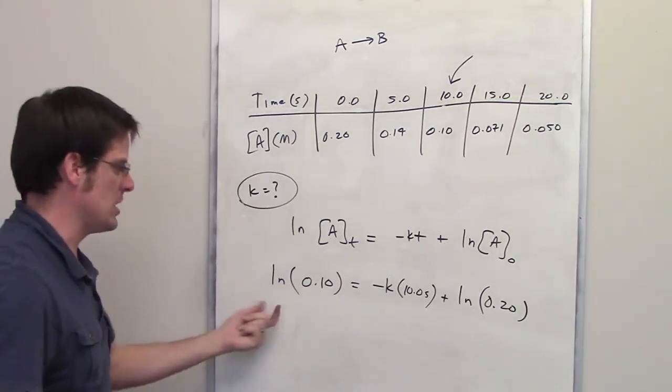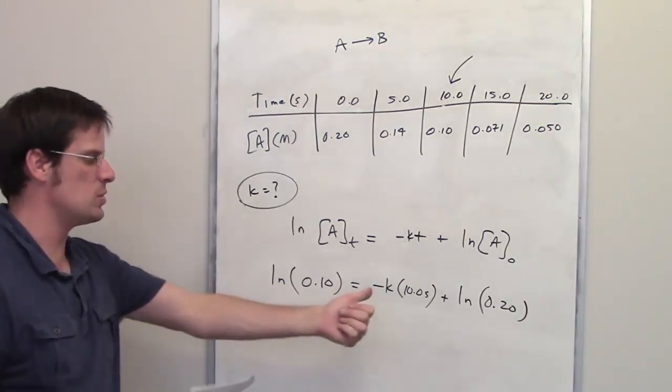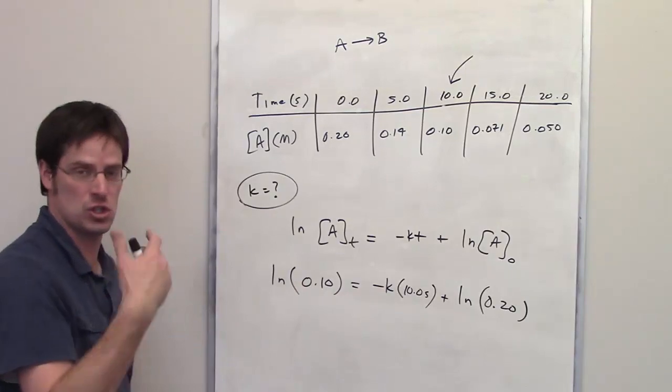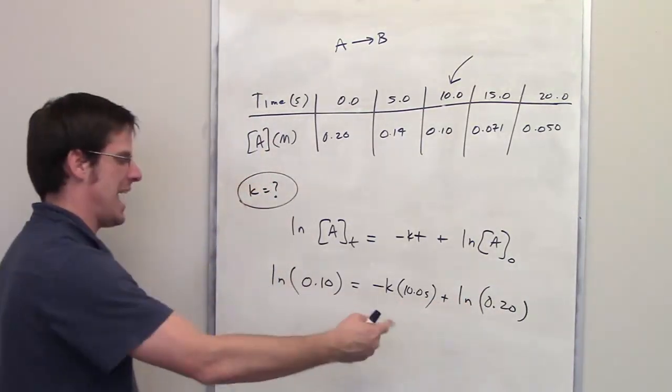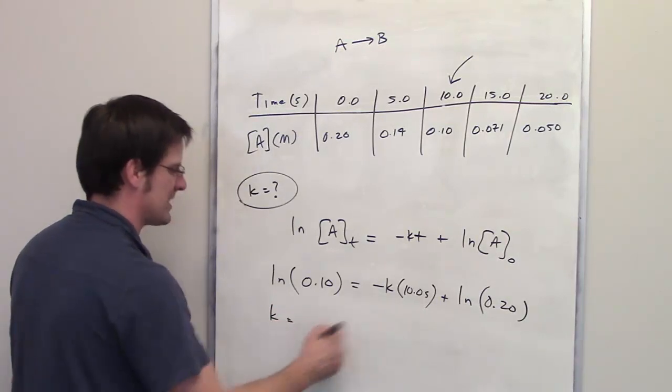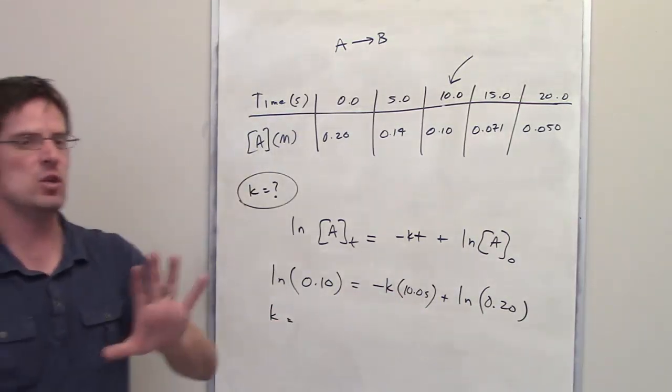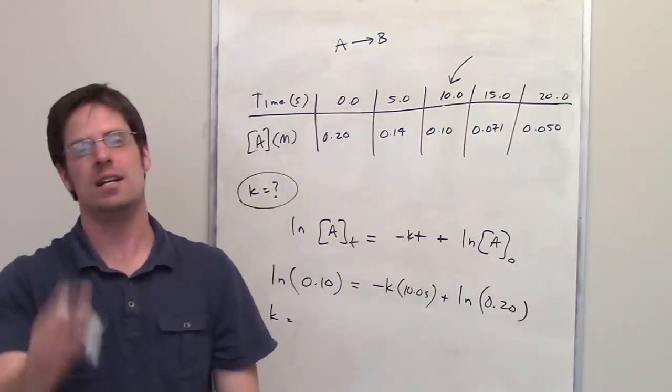So this is pretty much it. You can throw in all of these values into your calculator to determine what the ln of 0.1 is. It should spit out a number. To determine what the ln of 0.2 is, spit out a number, and then use algebra to get K on one side and everything else on the other. If you do that all right, then hip hop hooray, you should get the correct answer.